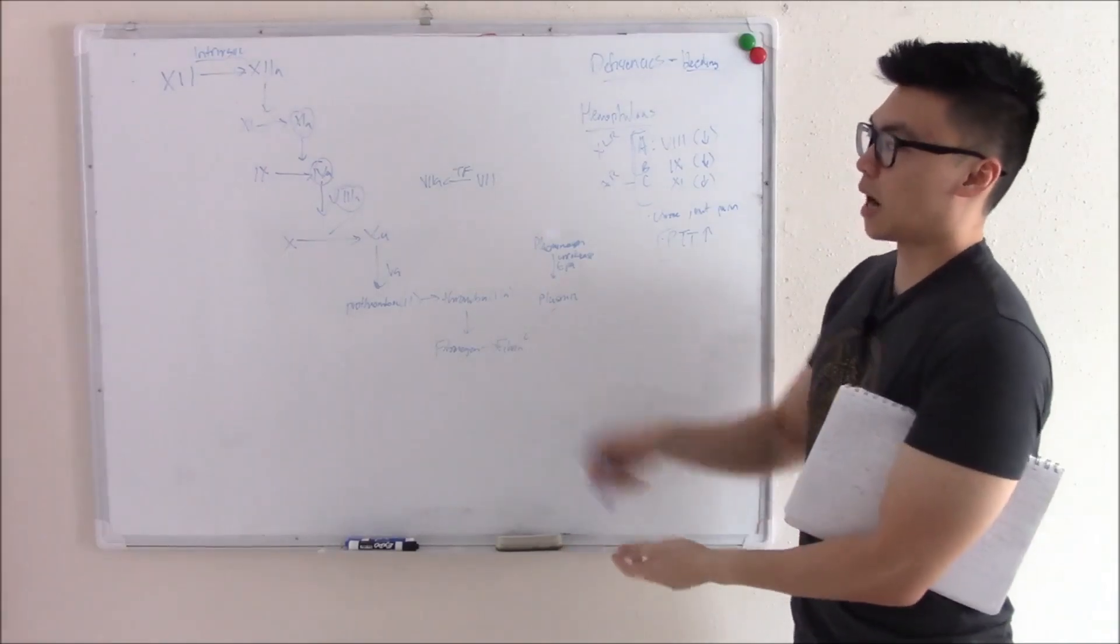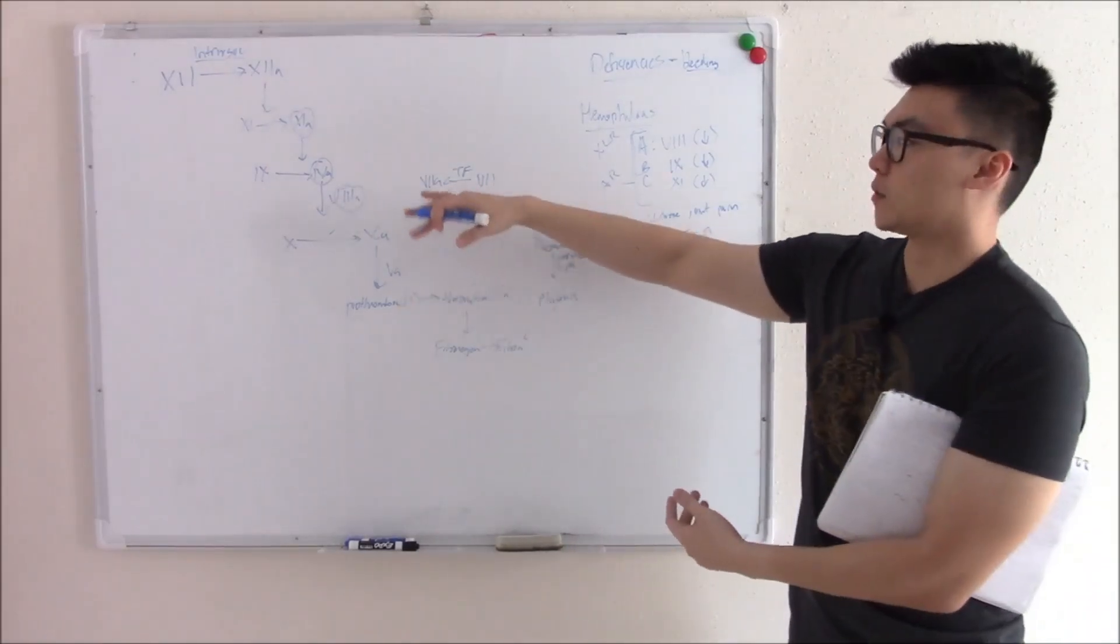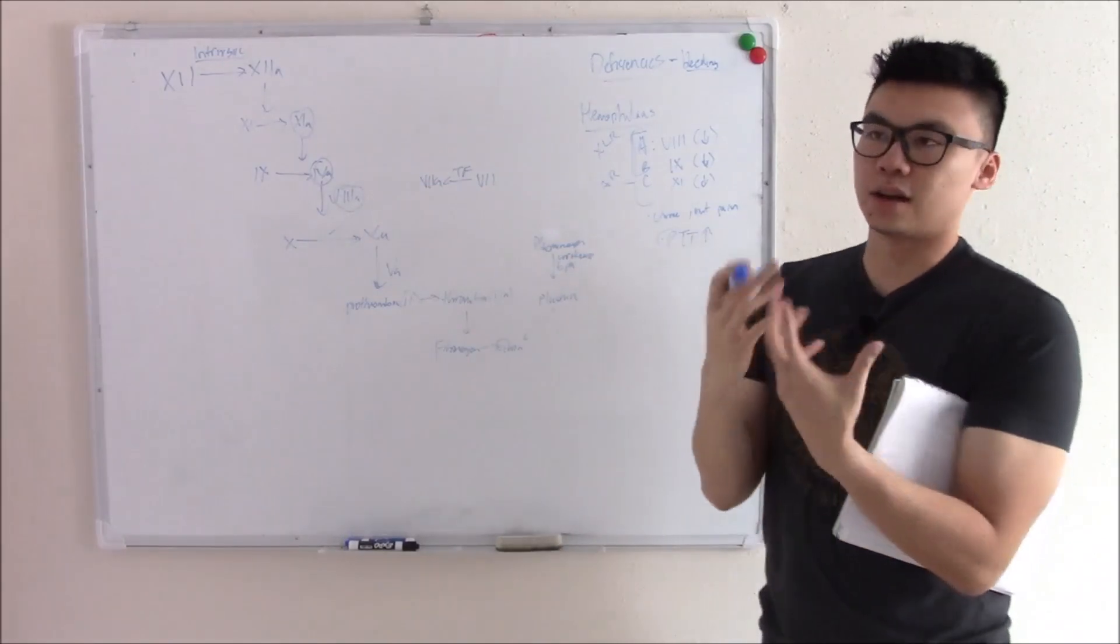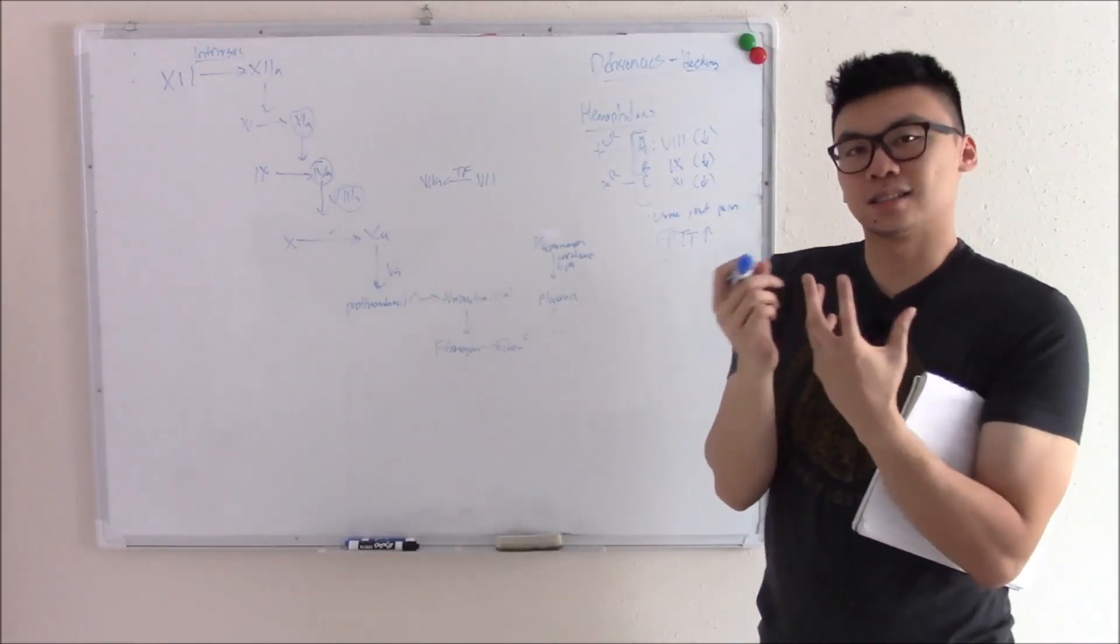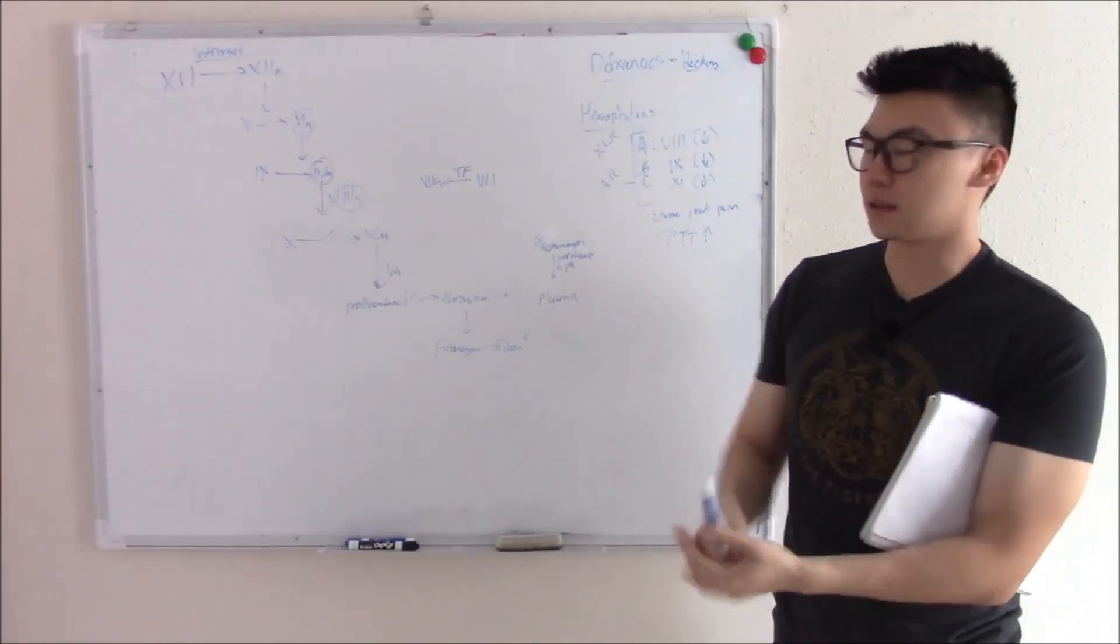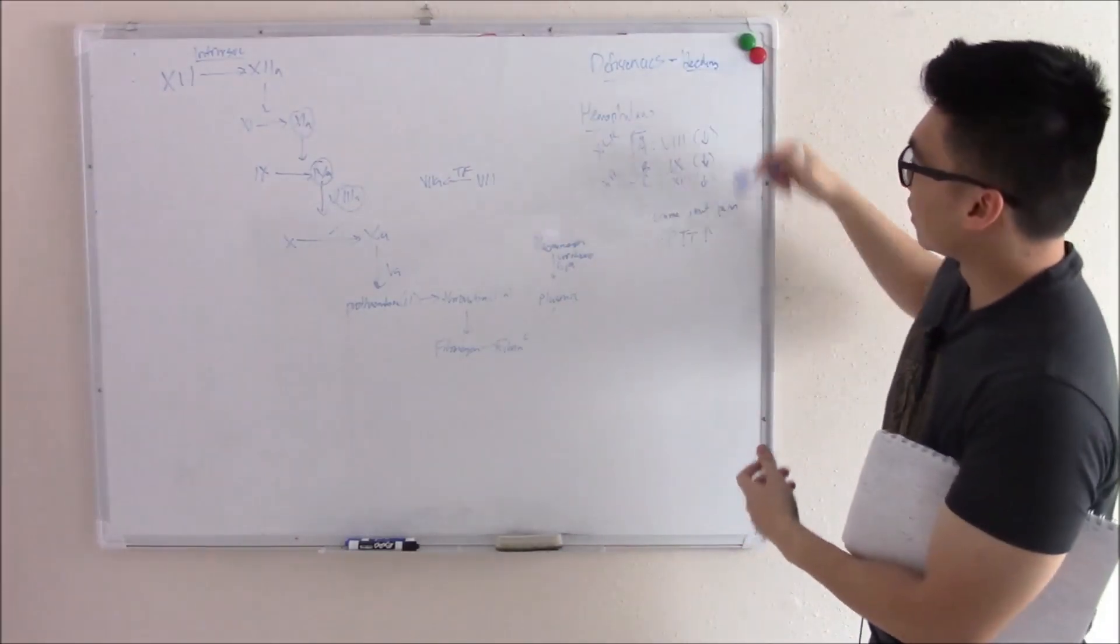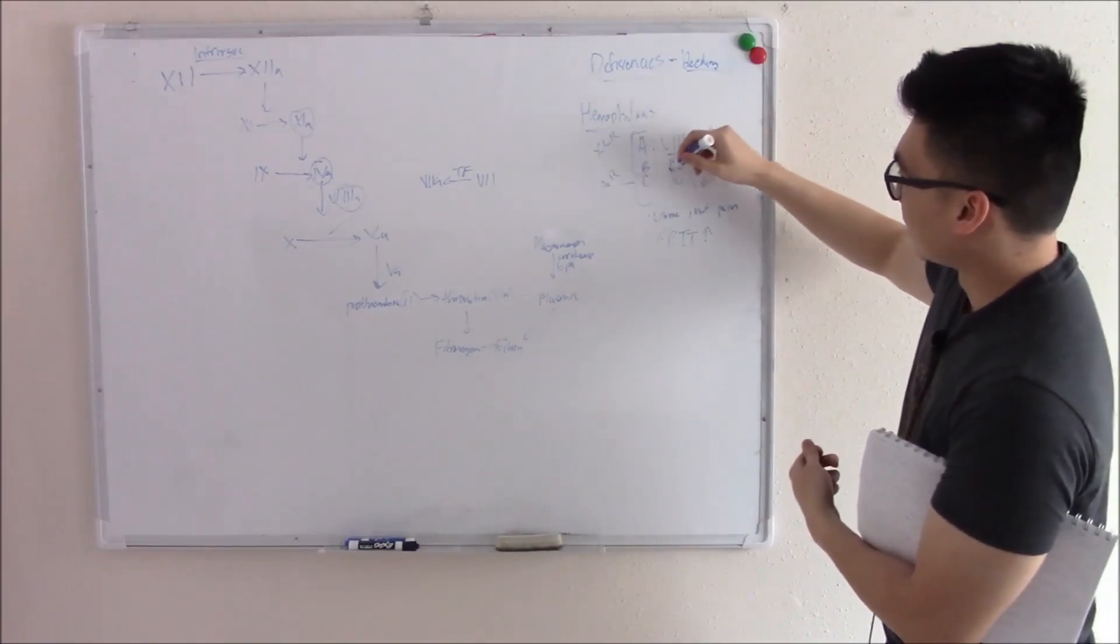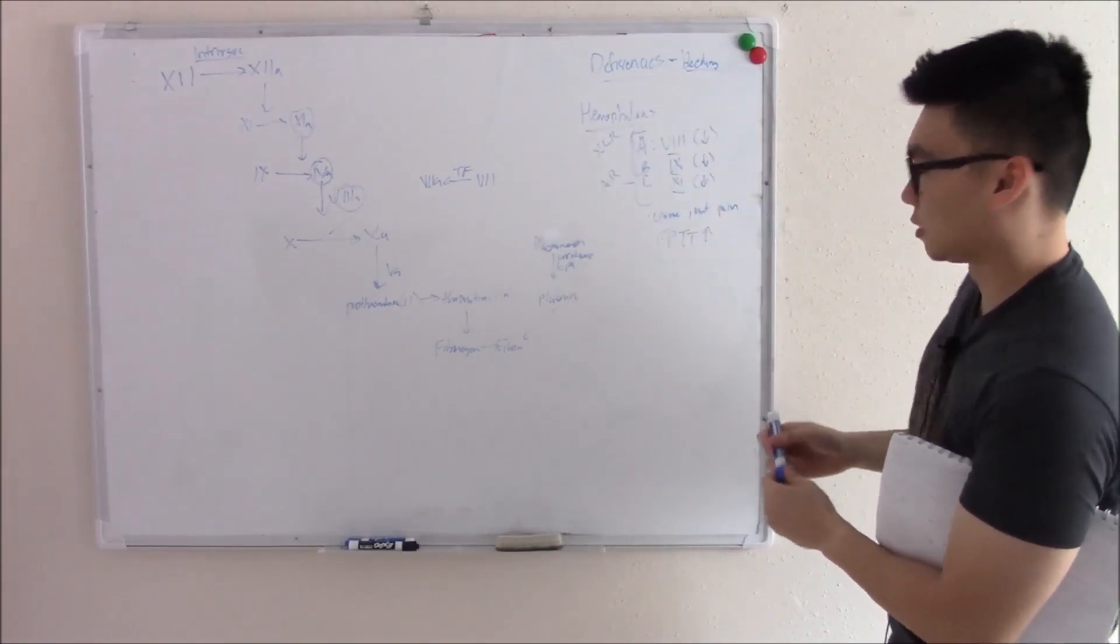Now the severity of disease depends on how much or how little you're making. Sometimes you can have a very minor disease where you're making just slightly less. Sometimes you have very severe disease where you're making a lot less. Treatment, if it's very severe, then you'll just give these concentrates to the patient.